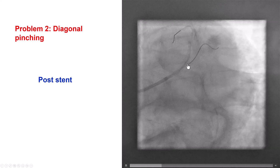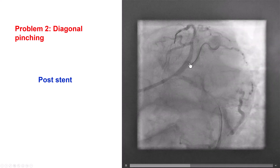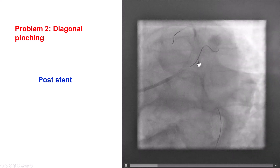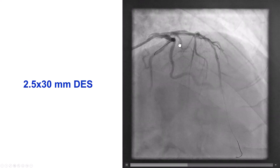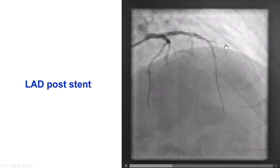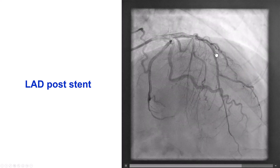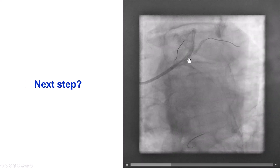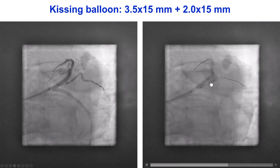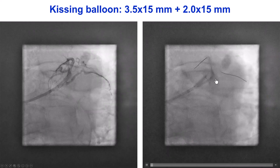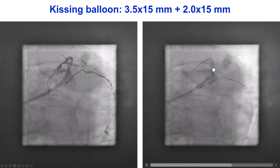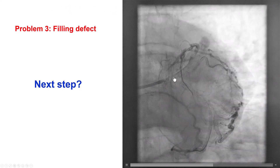However, there is another problem now: we have pinched the ostium of the diagonal branch. So this is an example where one complication brings another. We decided to first treat the LAD, placing a 2.5 by 30 mm stent across another diagonal branch; however, there was no cessation of flow in the diagonal. We then decided to treat this by ballooning the side branch rather than placing a stent in this smaller branch. We rewired the vessel, and then a kissing balloon inflation with a 3.5 mm into the LAD and a 2.0 mm into the diagonal branch gave a satisfactory result.